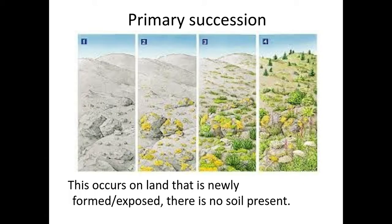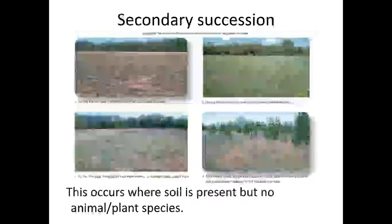So we've got primary and secondary succession. Primary succession starts or occurs where we have newly formed land and there's no soil present. An example of this would be a volcanic island that has recently been formed, for example in the Pacific Ocean.